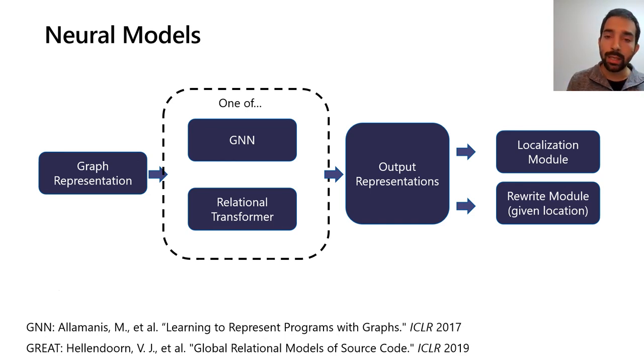The graph representation is passed into a graph neural network, or a relational transformer, which have shown state-of-the-art performance. The outputs of these components are then used by the localization module, which is a pointer-like network pointing to the location of a rewrite, or a special location to indicate that the snippet should be left intact.